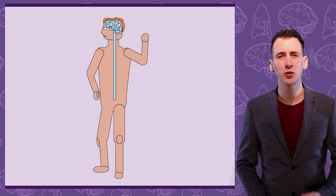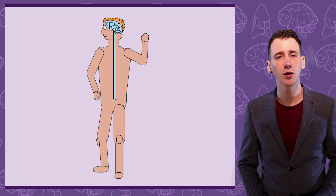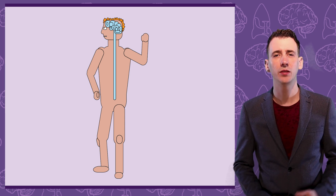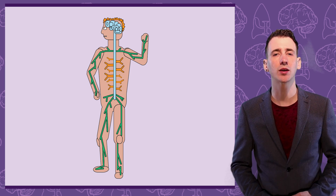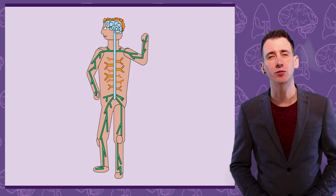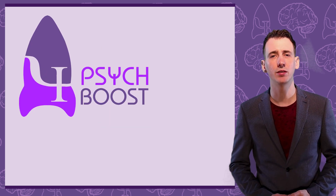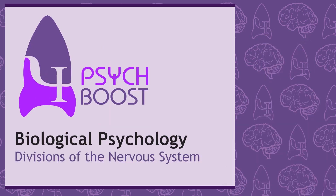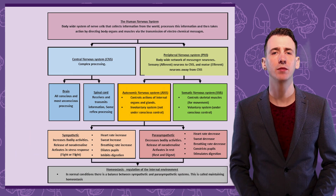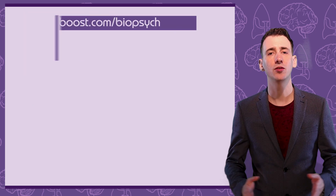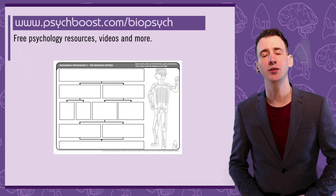When you think of the nervous system, you usually think first of the brain and perhaps the spinal cord. These provide important functions. To get a true picture of the nervous system, we need to look across the body to get a complete idea of the range of its role. In this episode of Psych Boost, Divisions of the Nervous System. In this video, we're going to construct this diagram. If you want a blank one, you can grab it for free on my website. The link's below.